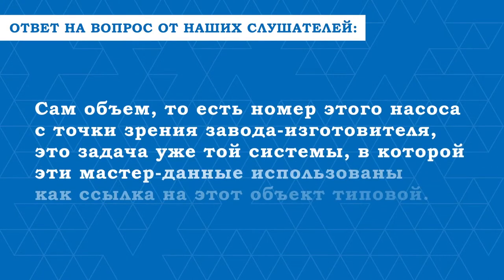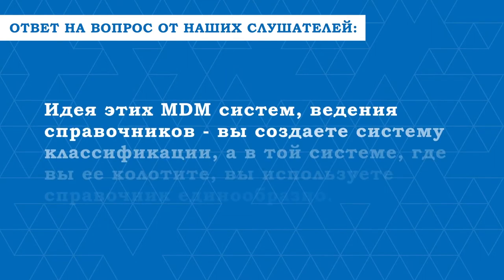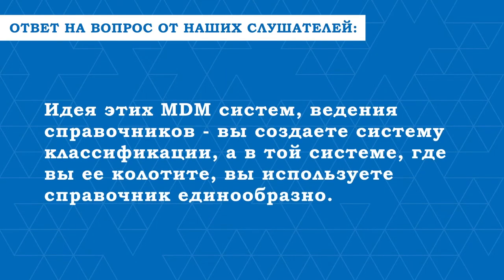Сам объём, то есть номер этого насоса с точки зрения завода-изготовителя — это задача уже той системы, в которой эта мастер-данная использована, то есть как ссылка на этот типовой объект. Идея этих MDM-систем, ведения справочников: вы создаёте систему классификации, а в той системе, где вы её используете, вы используете справочник единообразно.